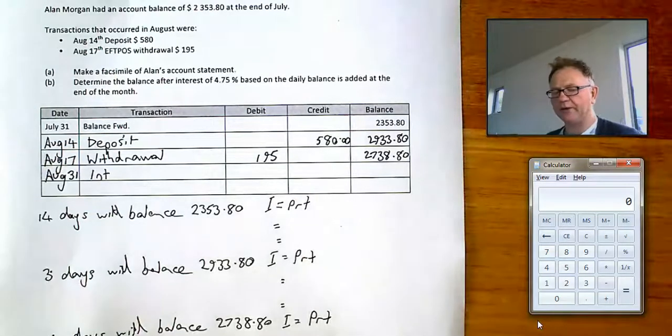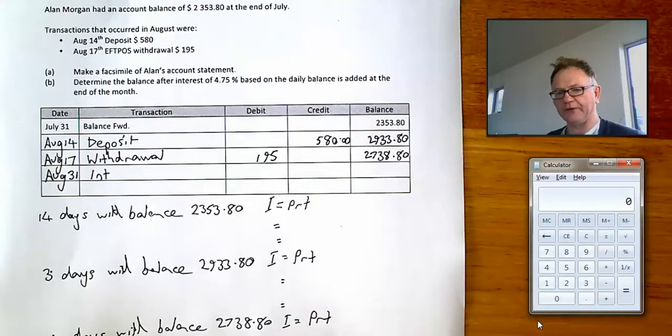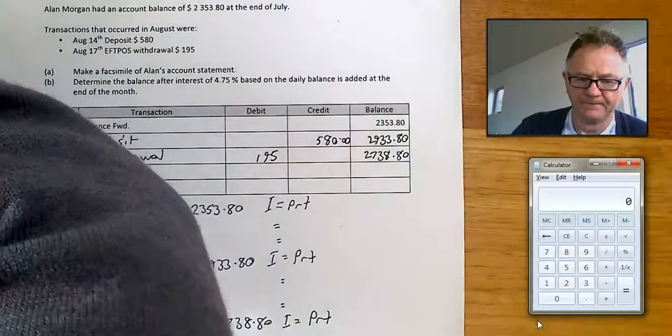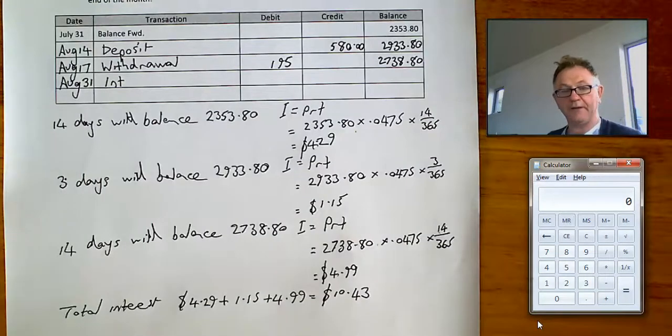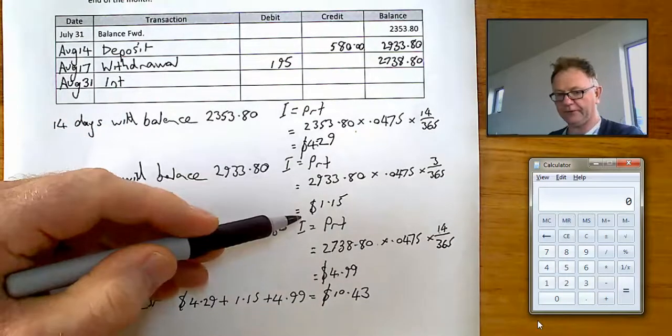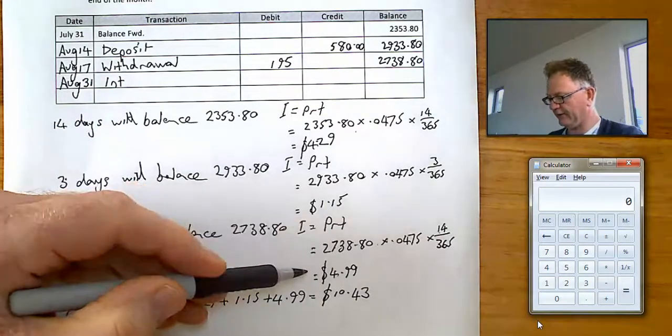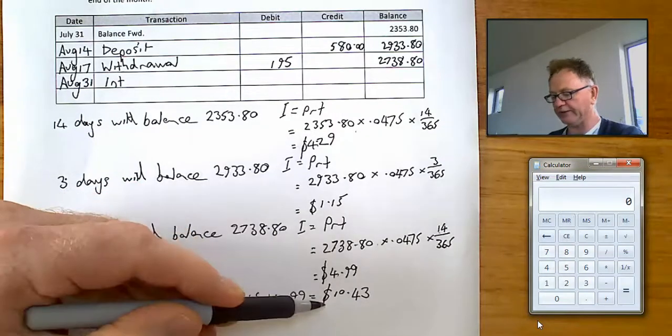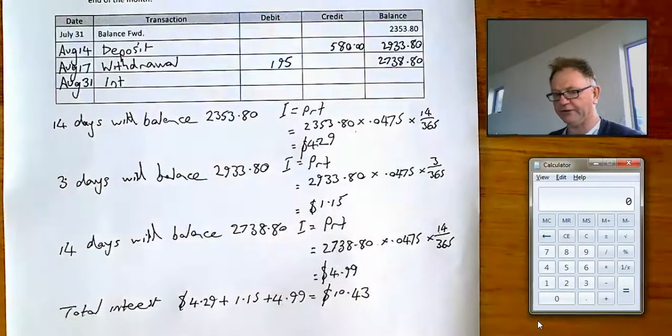Okay, what I'd like you to do now is to pause the tape. I'm going to pause the tape too. Let's do some calculations and see if we can come up with the amount of interest which should be added at the end of the month. Okay, how did you go? I got interest amounts of $4.29, $1.15 and $4.99 making a total of $10.43.